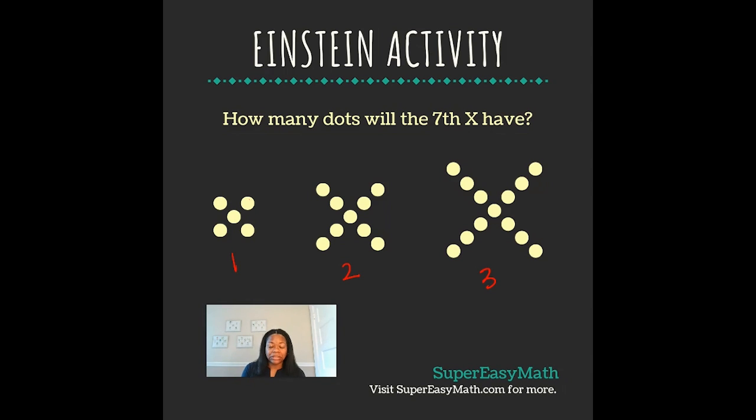That I can to figure out what the seventh would look like. And I can see that they all have a center dot, but the amount of dots used to create the exterior X portion is equivalent to whatever number.